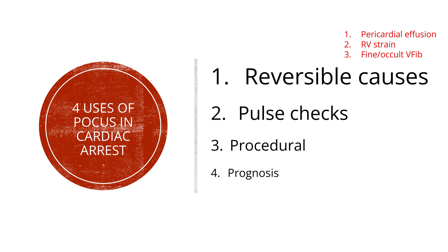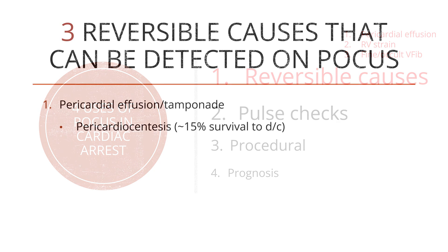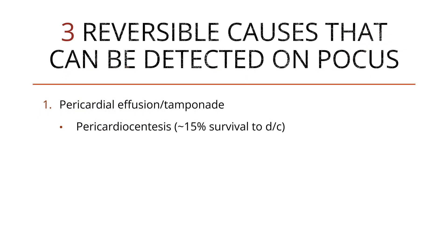Let's discuss reversible causes. There are three big ones: pericardial effusion and tamponade, RV strain, and number three, fine or occult V-fib. I recognize that there are more than three reversible causes of cardiac arrest; however, these are the best three for POCUS.